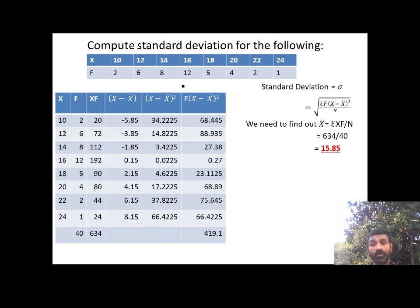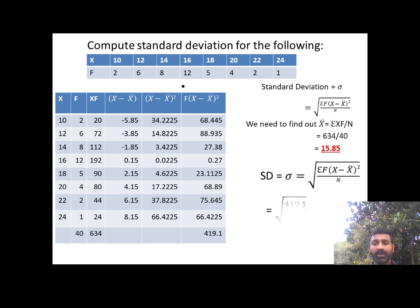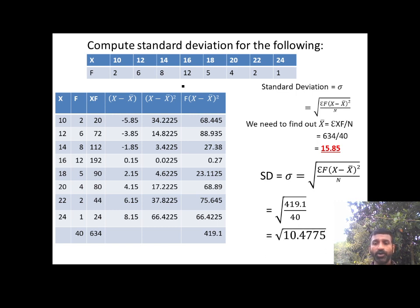The sum of f(x−x̄)² divided by N is 419.1 divided by 40. That gives us the square root of 10.4775, and the standard deviation sigma equals approximately 3.2368.